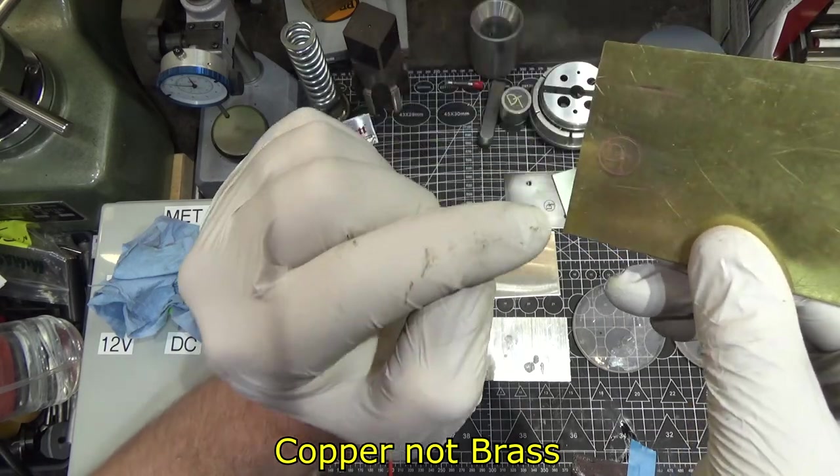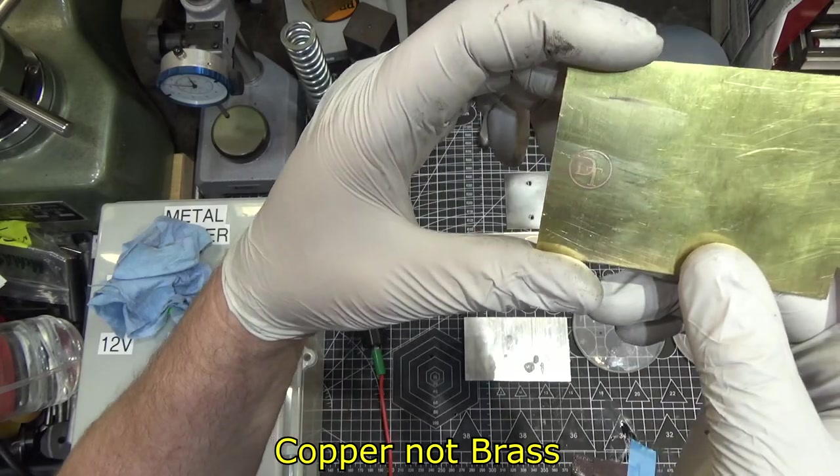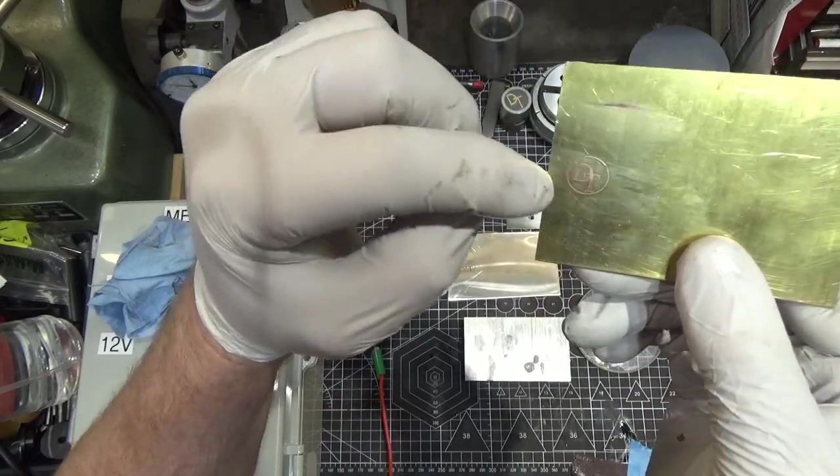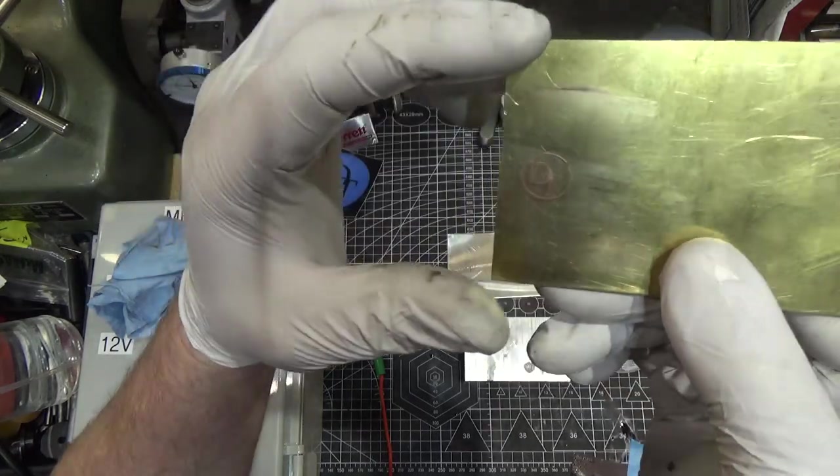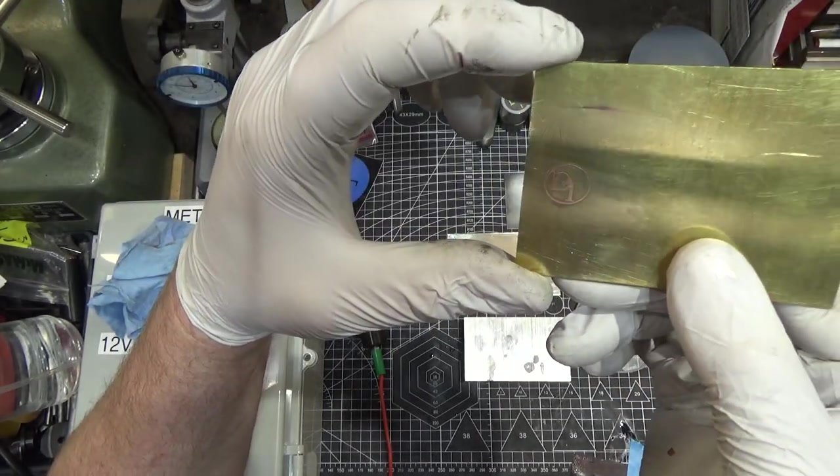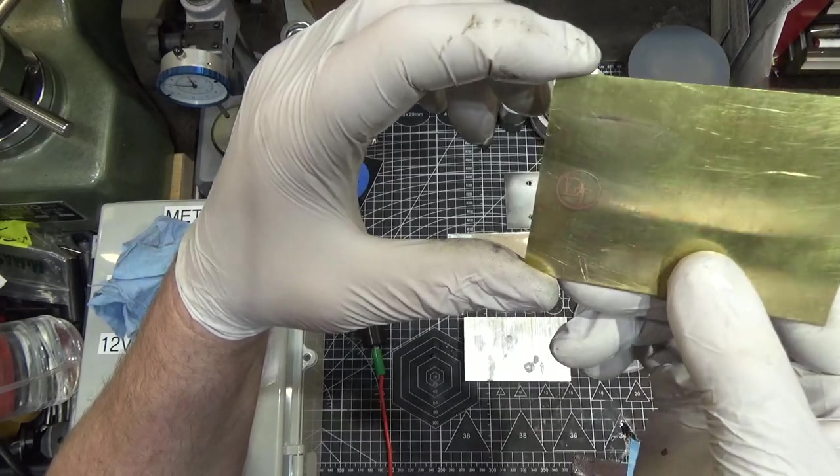So apparently this solution, the EX10 solution designed for chrome and things like that, also will leach out the zinc out of the brass and leave just copper, which is a fantastic contrast. I'm going to have to remember that one.